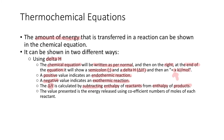Some of you who have done physics already will have learned about the specific heat capacity of water and how much energy it takes to change the temperature of water. What happens is that they do these chemical reactions in bomb calorimeters, which are similar pieces of equipment to what you used in physics. They do a chemical reaction within this container, it heats up or consumes energy from the water, and they measure the temperature change in the water and work out how much energy was consumed or released in the chemical reaction. The value given is the energy released or consumed using the coefficient numbers of moles of each reactant.